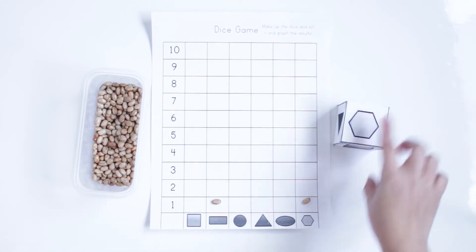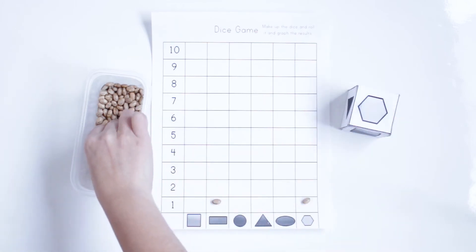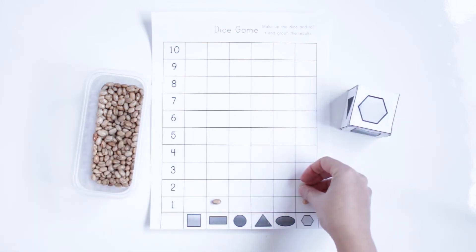The next one, hexagon again, so I need to put one more bean. Now you can ask them, how many times the hexagon show up? So, two times.